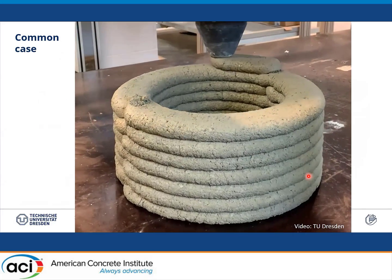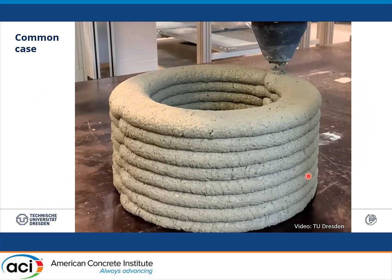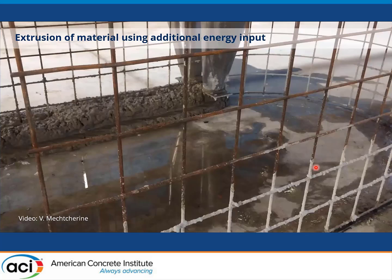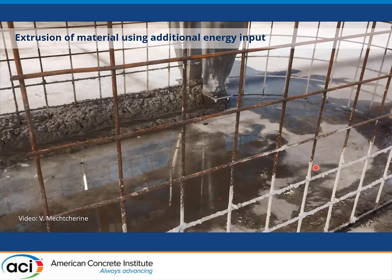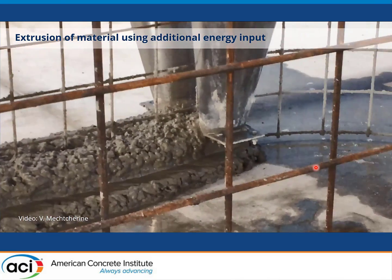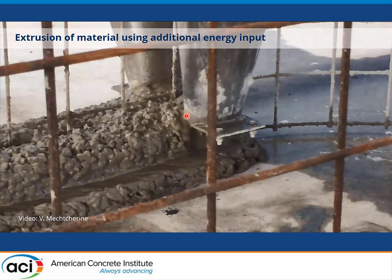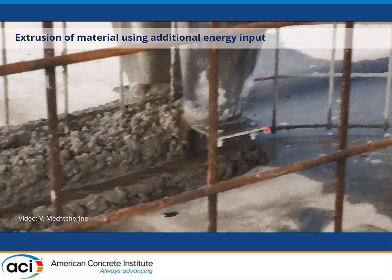This is an example of the common case where we have not very well defined flow conditions. The third, pretty rarely applied category is extrusion of material using additional energy input, for example vibration, as you can see here in some fluctuation of the material. This energy input facilitates the delivery and deposition of stiff mixtures.